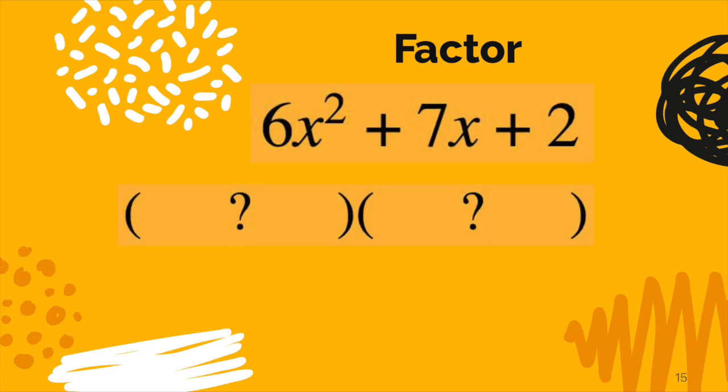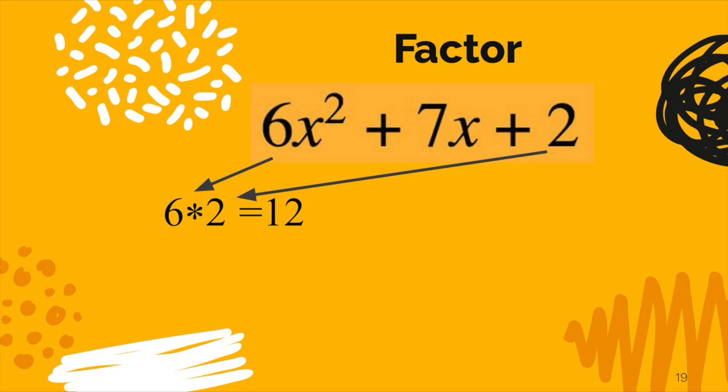So now the question is, how do you undo that multiplication problem? What would the two binomials be that you're looking at that multiply to be 6x² + 7x + 2? Well, there is an algorithm that you can use to actually figure this out. What you do is you take your leading coefficient here, it's 6, and you take your constant here, which is 2, and you multiply them together and you get the number 12.